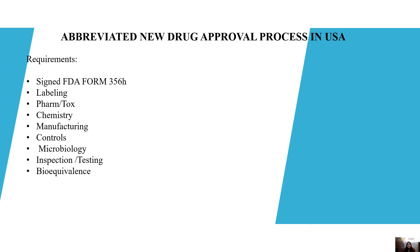Labeling must include the same information as brand name labeling. Pharmacology or toxicology requires that all inactive ingredients must be approved in either the reference listed drug or similar NDA at the same or higher level. Chemistry, manufacturing, and controls should describe the composition, manufacture specifications, and analytical procedures for the drug substance and drug product. Microbiology should include microbiological information, inspection and testing of the site where it is being manufactured. Bioequivalence includes information that shows the drug product is bioequivalent to the reference listed drug upon which the applicant relies.